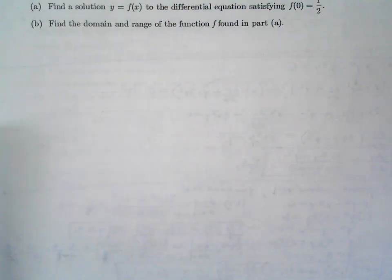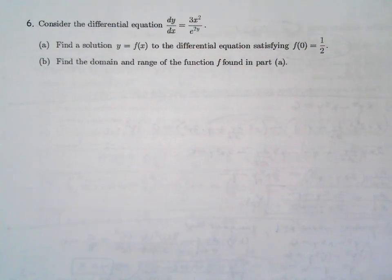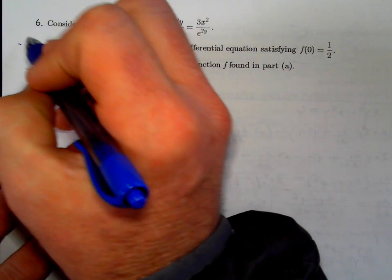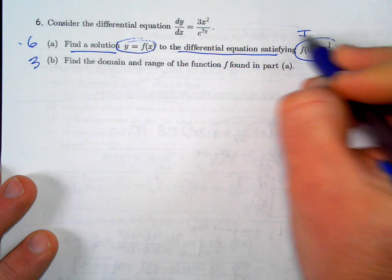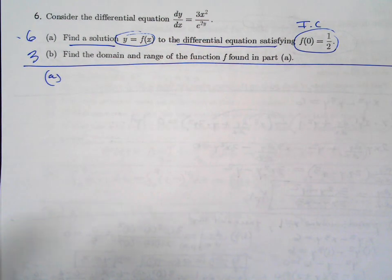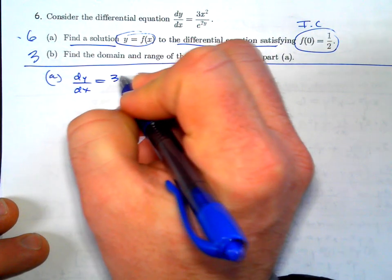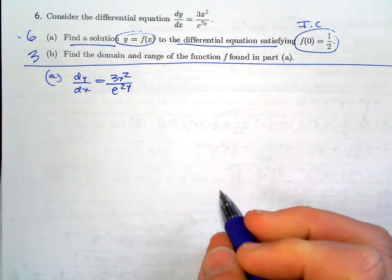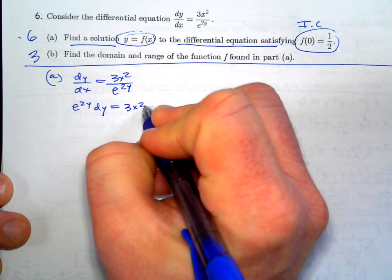The last problem: consider the given differential equation. This type of problem often involves creating or using a slope field, sketching a particular solution, and finding the solution satisfying an initial condition. The point breakdown is 6 and 3. These problems are great because they're predictable — find the solution satisfying the initial condition.